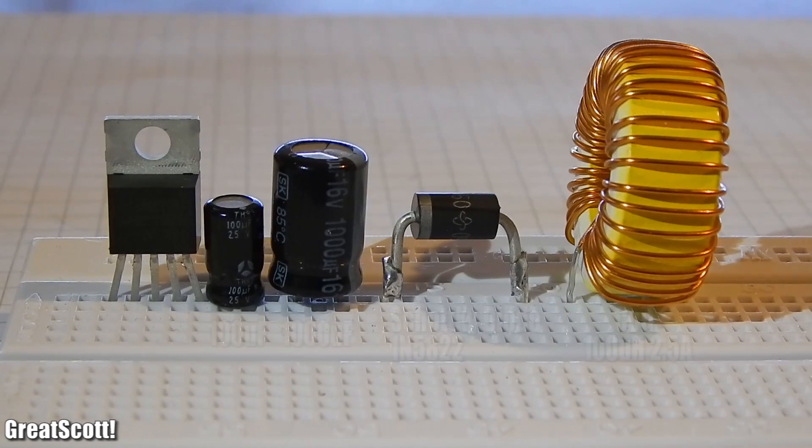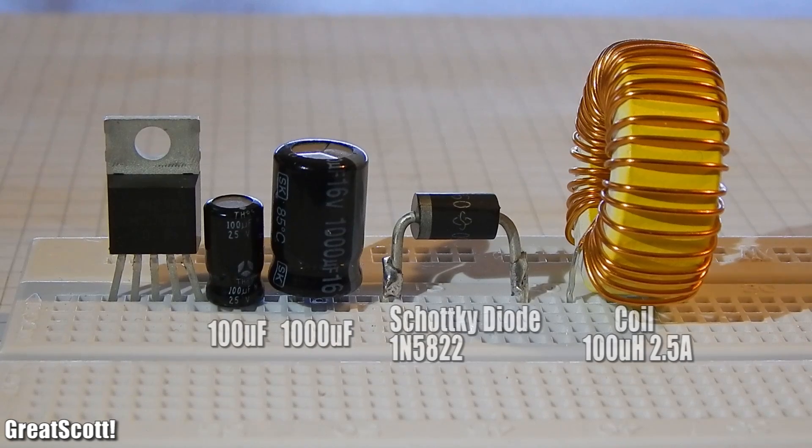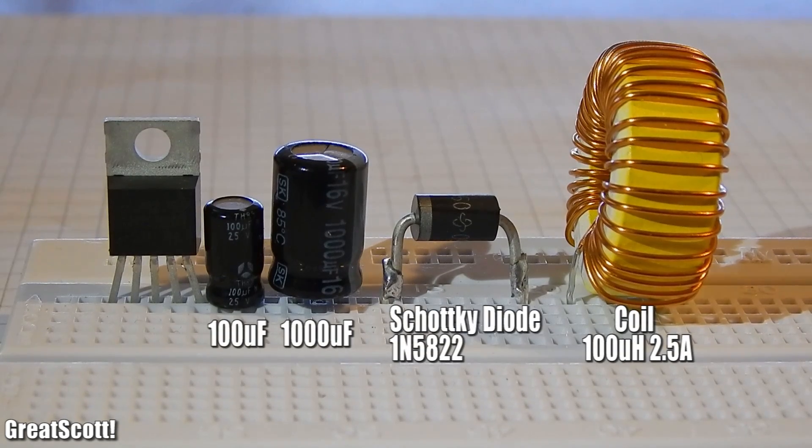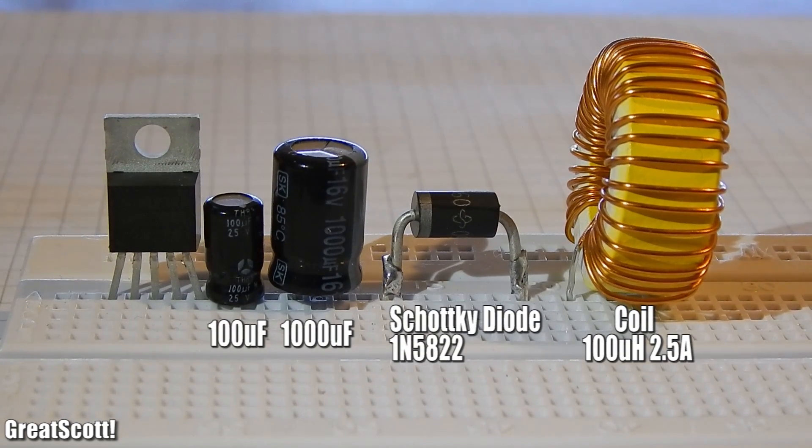The solution? A switching voltage regulator. By switching on and off the input voltage really fast, it creates a somewhat stable adjustable output voltage. In our case 5V. Complicated to explain in only one video.